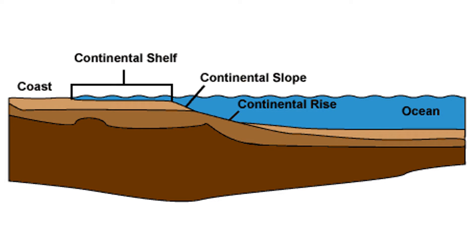Continental crust and oceanic crust are different in many ways, including thickness and elevation. Because of this and other differences, there are steep inclines and unique sedimentation systems in areas where the two types of crust meet. The system I will be talking about is known as continental slope and rise.